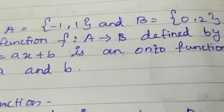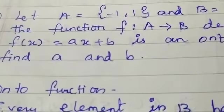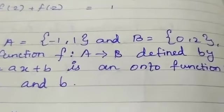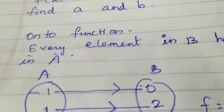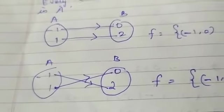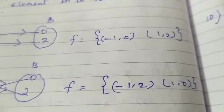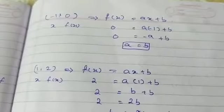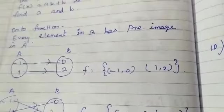In question 8, let A = {-1, 1} and B = {0, 2}. The function f: A to B is defined by f(x) = ax + b, and it is given to be an onto function. We have to find a and b. Since every element in B must have a pre-image in A, I have drawn two arrow diagrams giving function pairs: (-1, 0) and (1, 2), or (-1, 2) and (1, 0). I take the first set of values.